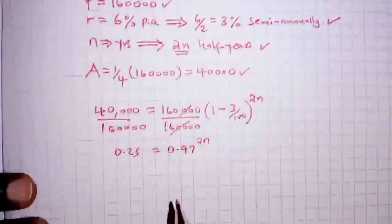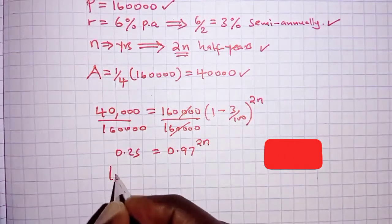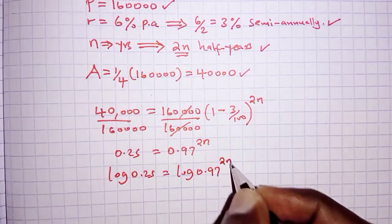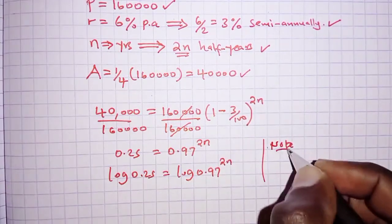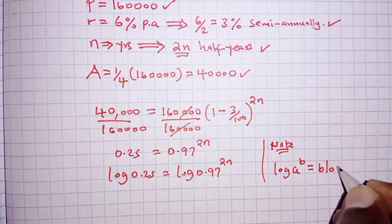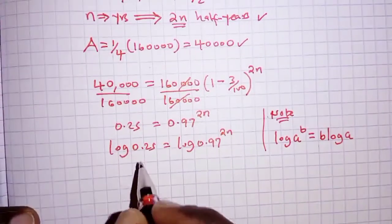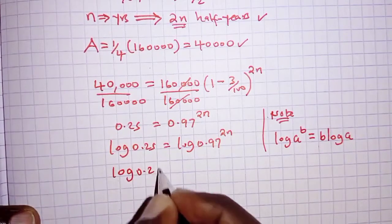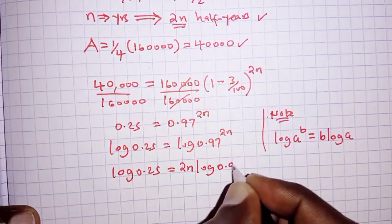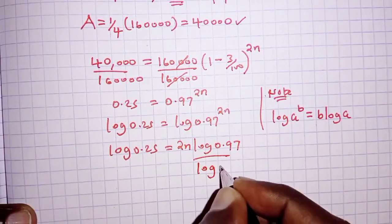At this point we introduce common logarithms to both sides: logarithm of 0.25 equals logarithm of 0.97 raised to 2n. We apply the logarithm law which states that log of a raised to b equals b times log a — the power comes down and multiplies the logarithm. So the left-hand side remains log 0.25, and the right-hand side becomes 2n multiplied by log 0.97. We then divide both sides by log 0.97.